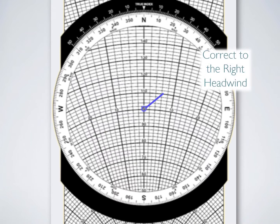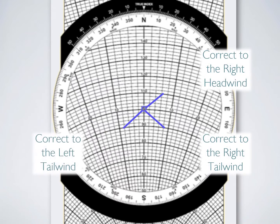Eventually you'll recognize that whatever quadrant your pen mark is lying in will determine whether you're correcting to the right or left or whether the wind is going to give you a headwind or a tailwind.